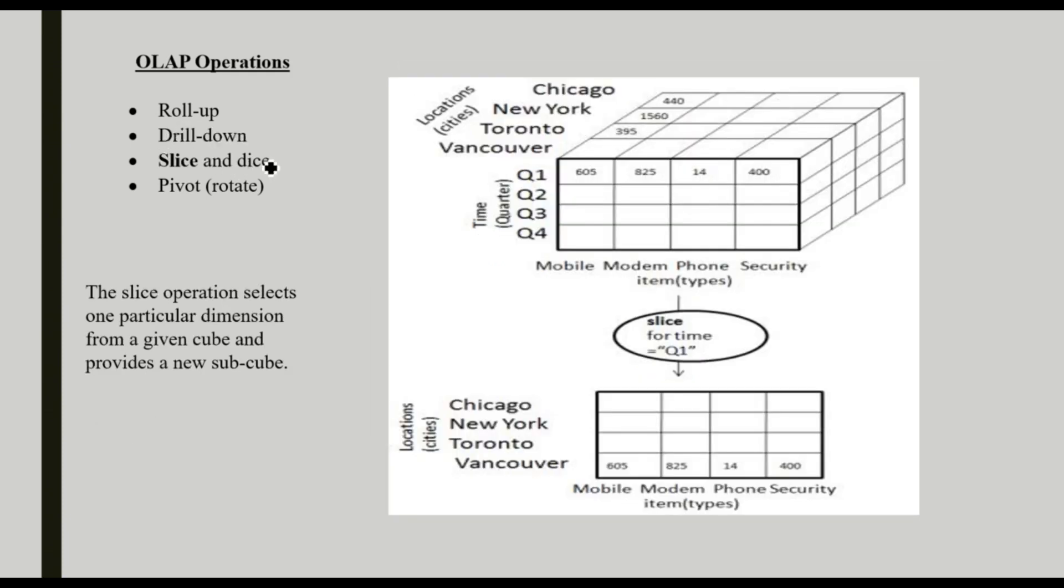Next is slice and dice. In the name, it is clear. We are slicing, like a bread or something. We are slicing, and sometimes we want to make it as a dice. What is slice? A slice operation selects one particular dimension from a given cube and provides a new sub-cube.